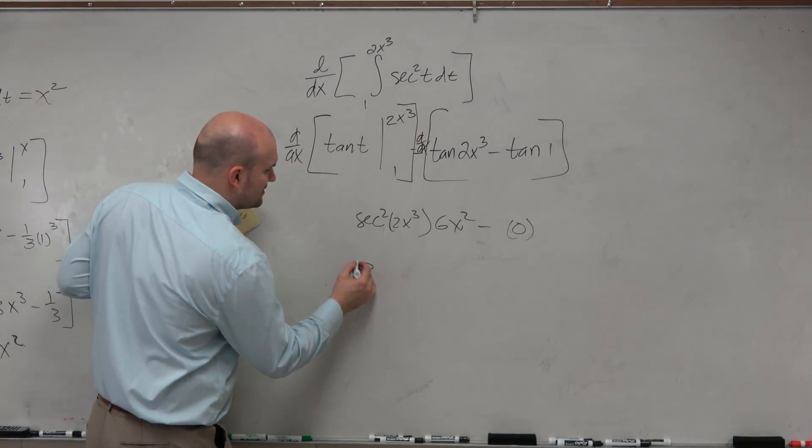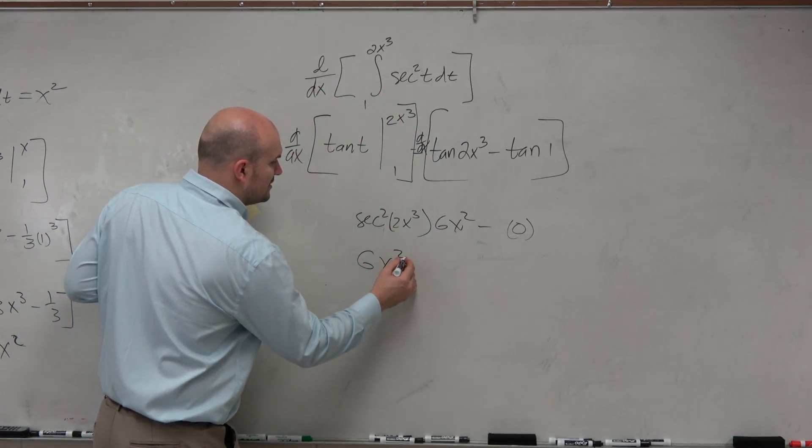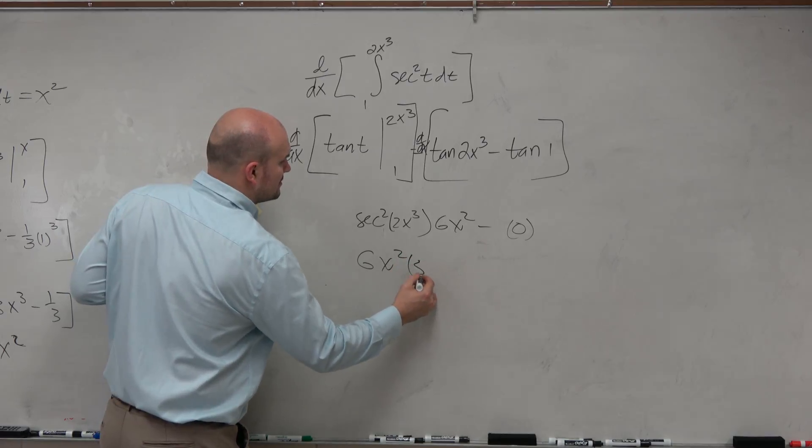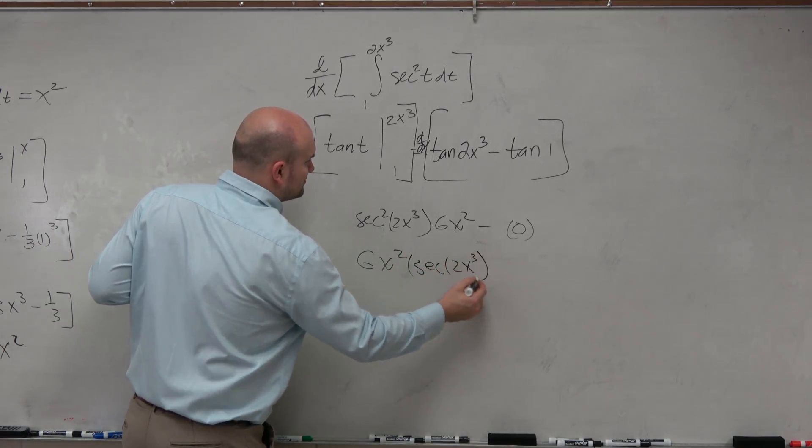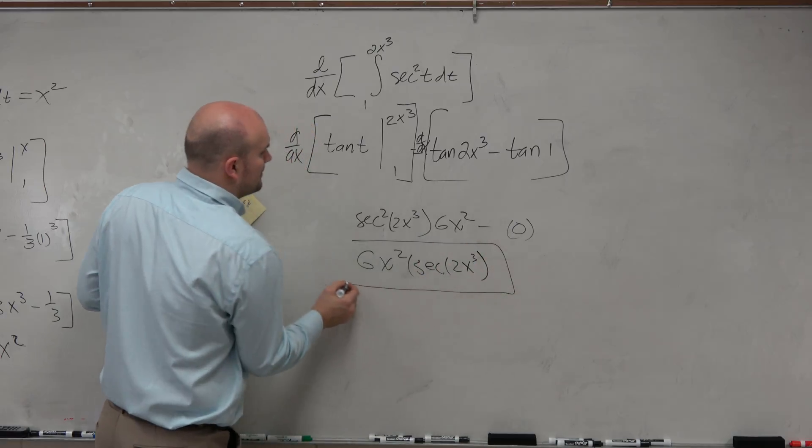Yeah. OK. So then, anyways, I was kind of moving a little bit too fast. 6x squared times secant squared of 2x cubed. OK?